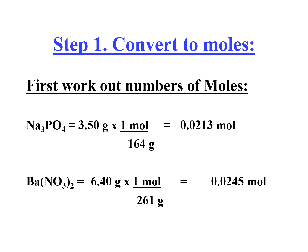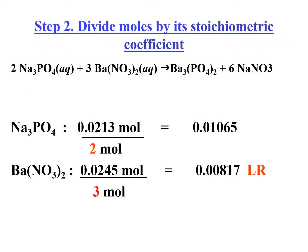Iconvert muna natin yung grams to moles. 3.5 over molecular weight will give us 0.0213 mole of sodium phosphate. 6.4 grams of barium nitrate divided by molecular weight will give us 0.0245 mole of barium nitrate. Ito na yung mole natin. We divide that.